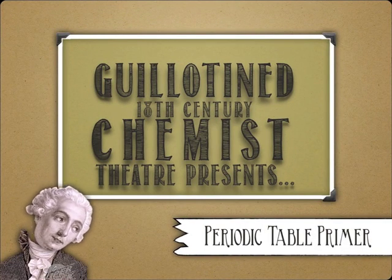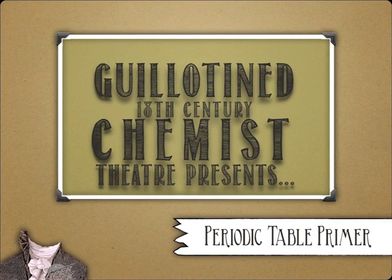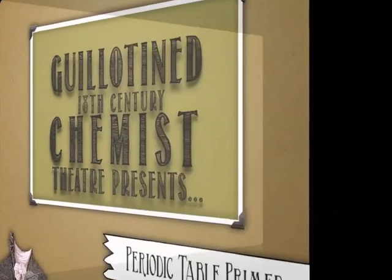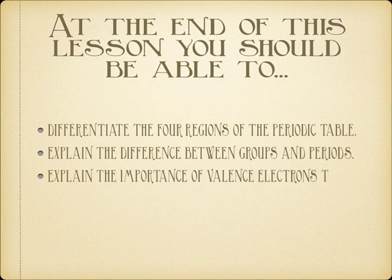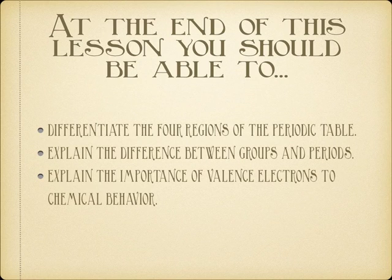Hello, and welcome back to Guillotine 18th Century Chemist Theater. Today we are going to talk about one of the most important documents in civilization: the periodic table. I'm not being facetious — I really do think it would make the top 10 documents ever created, and hopefully we'll justify that statement throughout these next couple presentations. We're going to differentiate the four regions of the periodic table, the terms group and period, and talk about valence electrons.